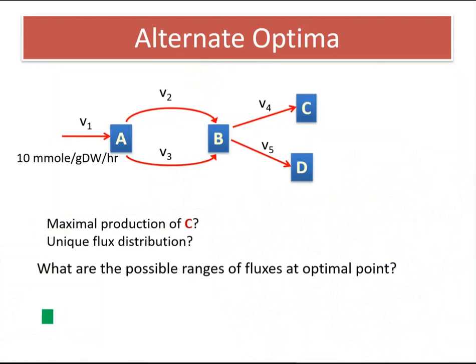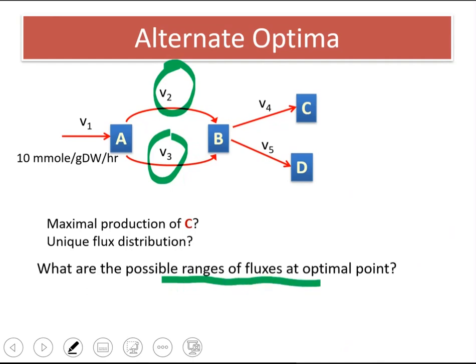So how should we handle this alternate optima? We cannot exactly predict the value of V2 and V3 in this case. There is no way to predict it because of all those different possibilities. But we can suggest, we can recommend a range for the fluxes. So we know that V2, considering that they are irreversible reactions, can have a minimum value of 0.